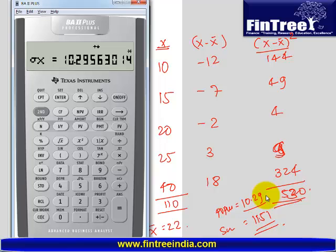So this is how by inserting values in your data function and then using the stat function, you can directly calculate population and sample standard deviations. Clear?